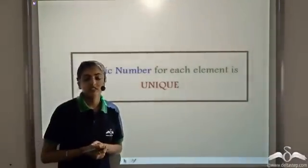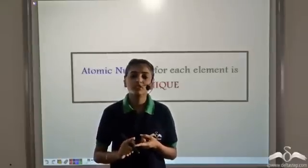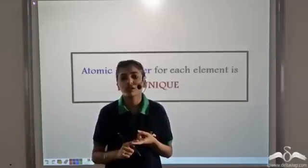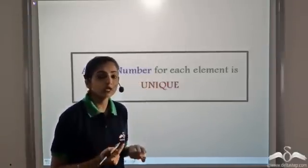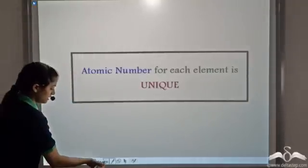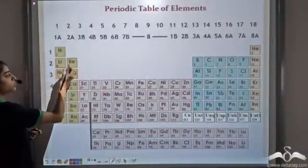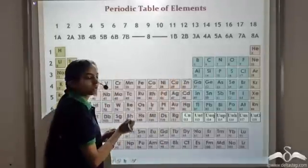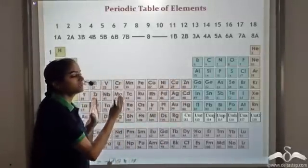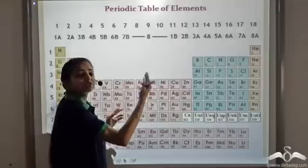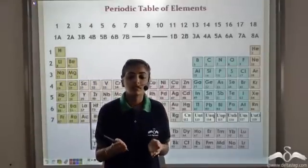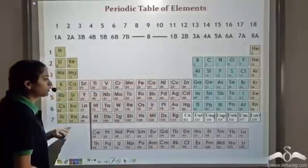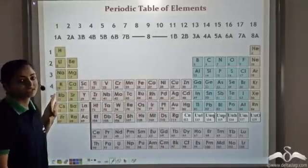The atomic number for each element is unique. When we change the number of neutrons, the atom becomes an isotope. When we change the number of electrons, the atom becomes an ion — positive or negative. But when we change the number of protons — for example, adding one proton to lithium makes it beryllium, and adding one proton to beryllium makes it boron — the element changes into a different element entirely. So the atomic number, that is the number of protons, is unique for each element, and therefore it was used as the property to classify elements in the modern periodic table.